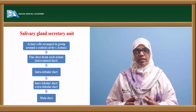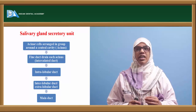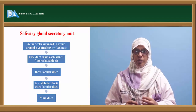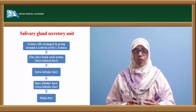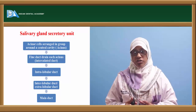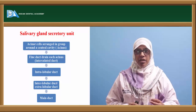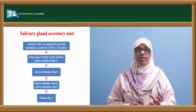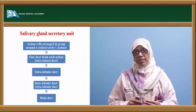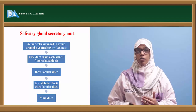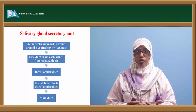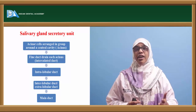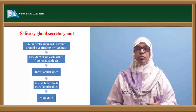The salivary gland secretory unit consists of acinar cells arranged in groups around a central cavity; the entire structure is termed an acinus. Fine ducts drain each acinus, called intercalated ducts. These intercalated ducts open into intralobular ducts, which eventually open into intralobular or extralobular ducts, and finally all of these drain into the main duct.